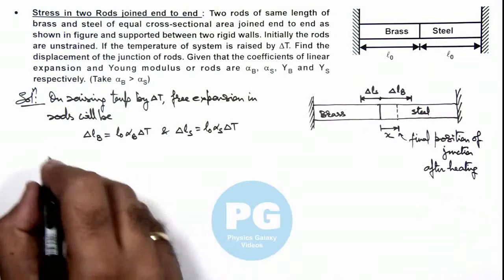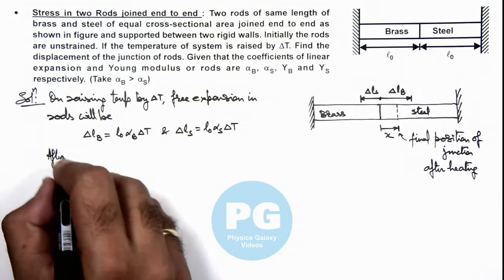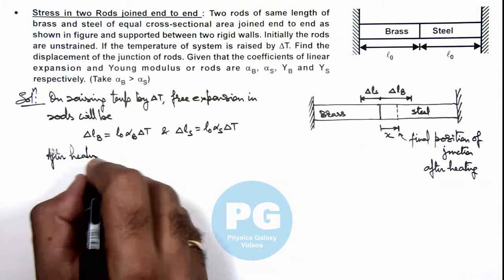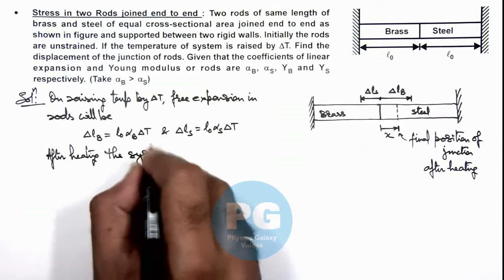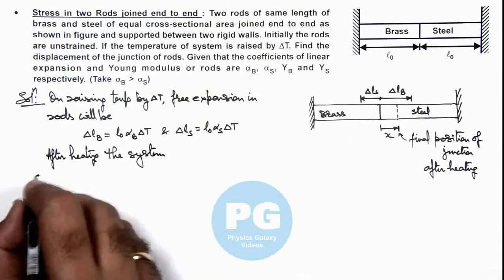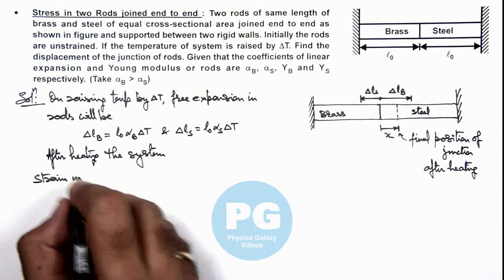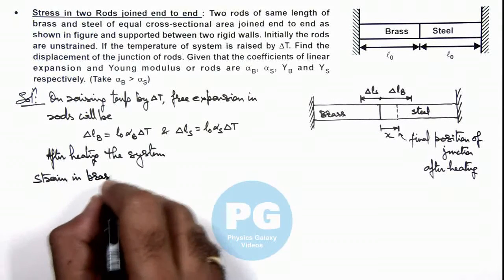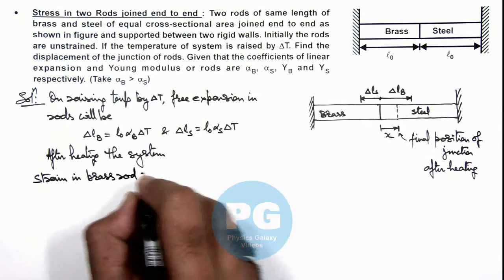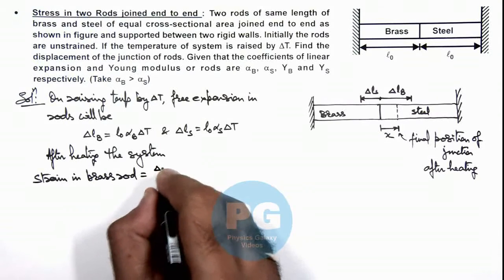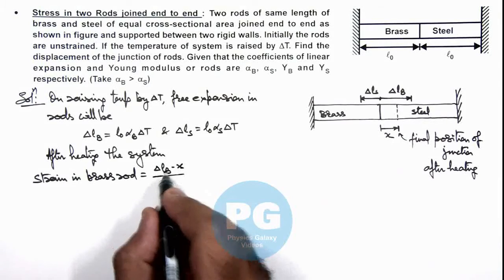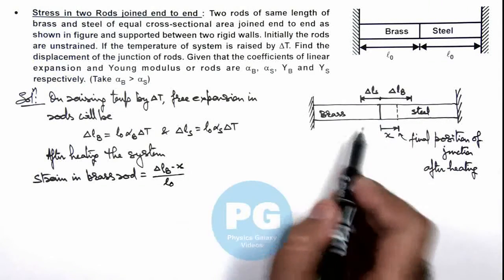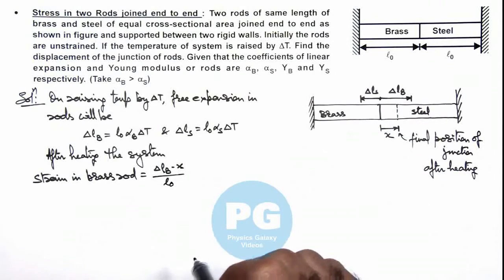So in this situation we can calculate after heating this system, strain in brass rod we can calculate as (ΔLB - x)/L₀. Initial length we can consider as L₀ as this ΔLB is very small compared to brass length L₀.